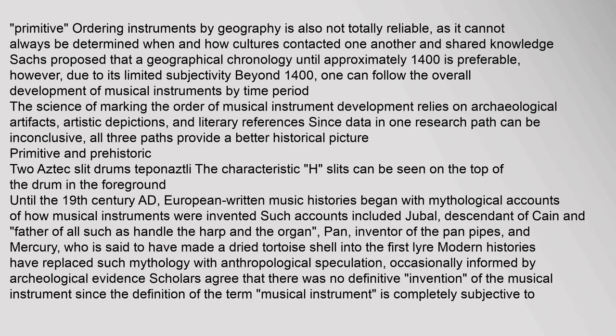Ordering instruments by geography is also not totally reliable, as it cannot always be determined when and how cultures contacted one another and shared knowledge. Sachs proposed that a geographical chronology until approximately 1400 is preferable due to its limited subjectivity. Beyond 1400, one can follow the overall development of musical instruments by time period. The science of marking the order of musical instrument development relies on archaeological artifacts, artistic depictions, and literary references. Since data in one research path can be inconclusive, all three paths provide a better historical picture.